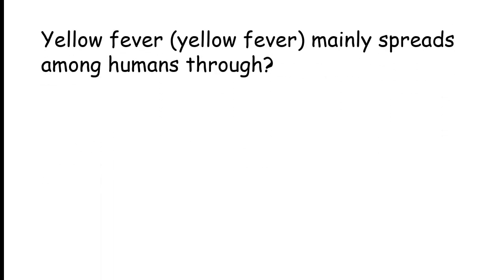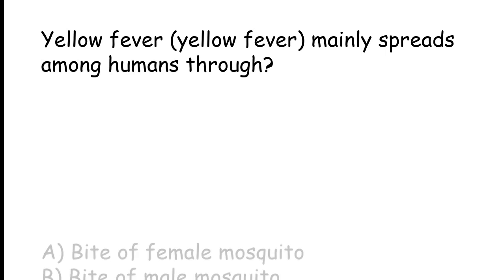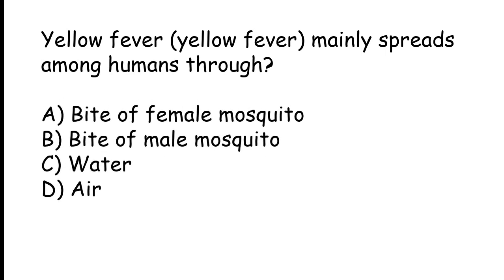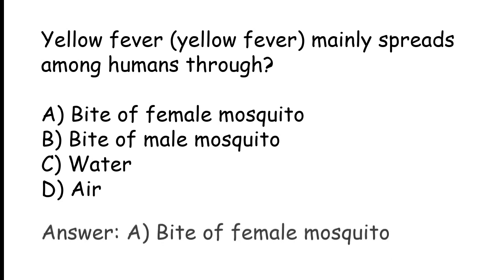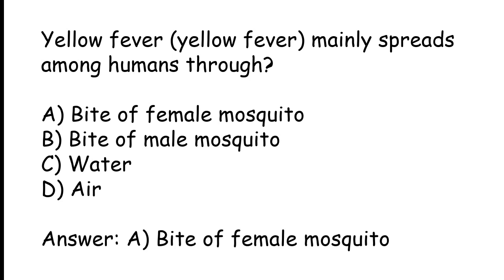Yellow fever mainly spreads among humans through: Bite of female mosquito, Bite of male mosquito, Water, or Air. The correct answer is Option A. Yellow fever mainly spreads among humans through the bite of a female mosquito.